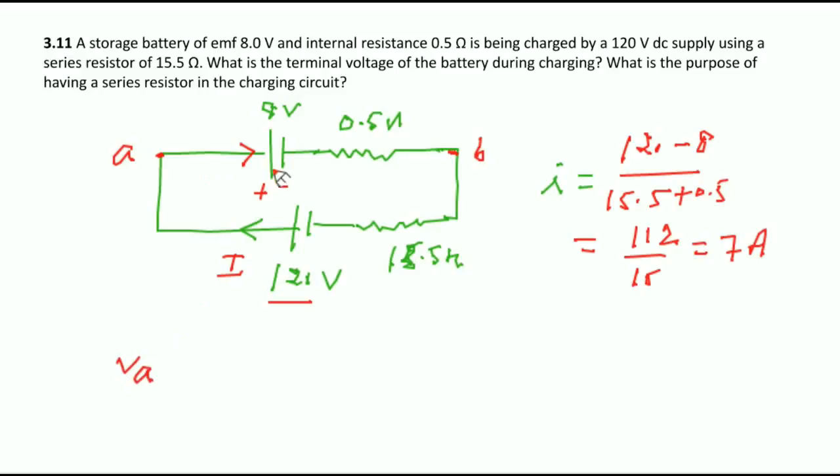B to A, you are going plus to minus. Here you have to write minus 8 minus I×R. I is given 7 into 0.5, this equals VB. So VA minus VB equals 8 plus 7 into 0.5, 3.5. This will be 11.5 volt.